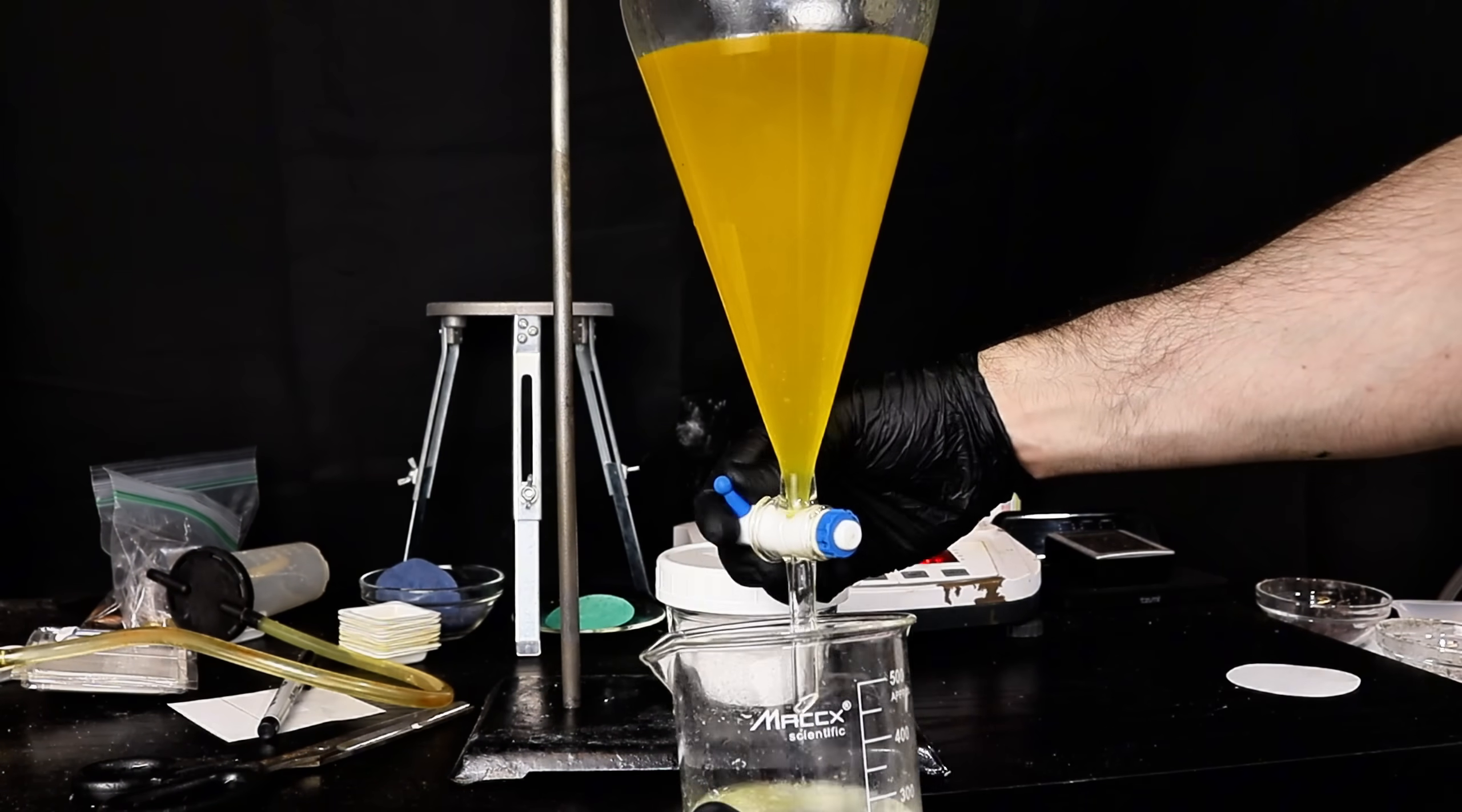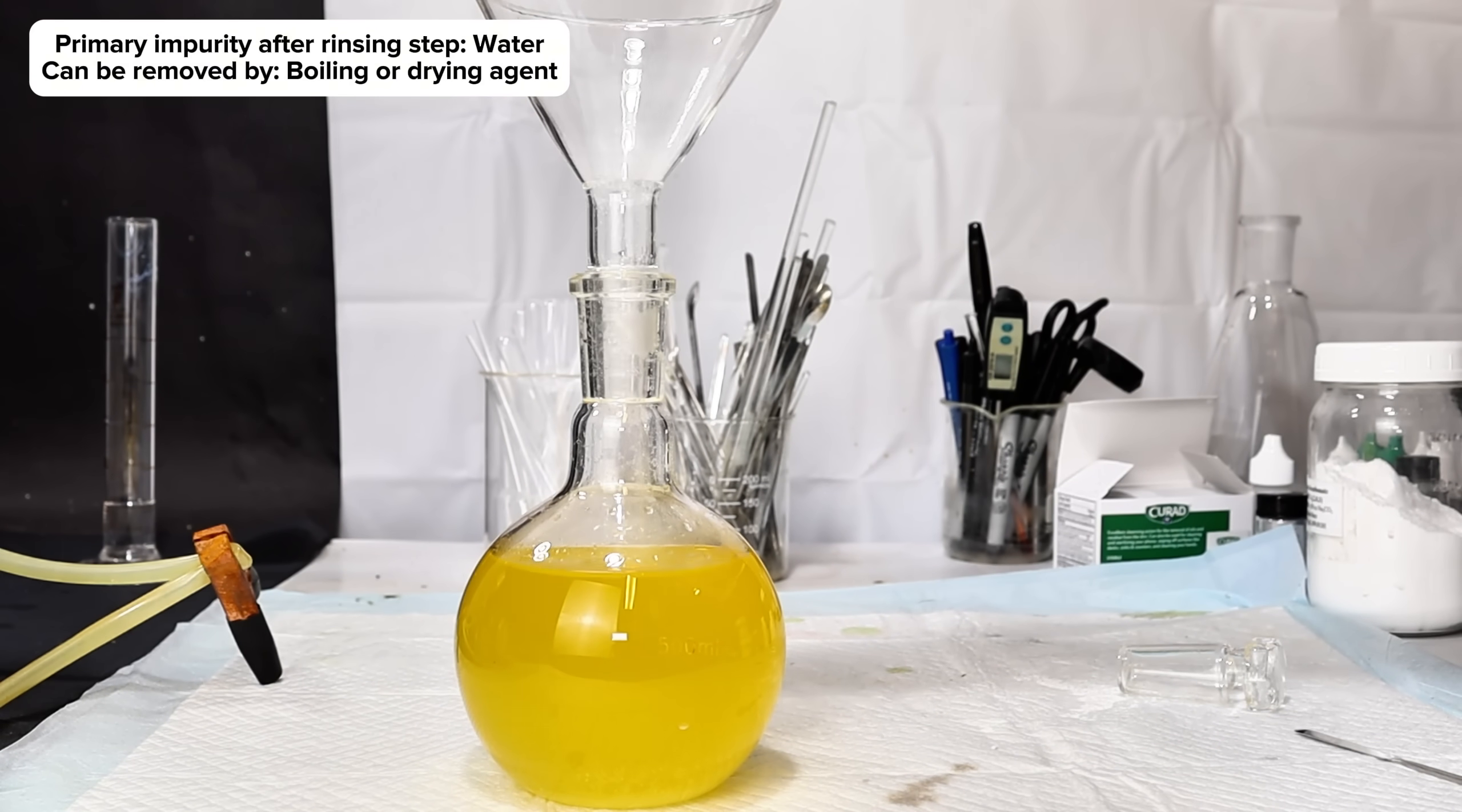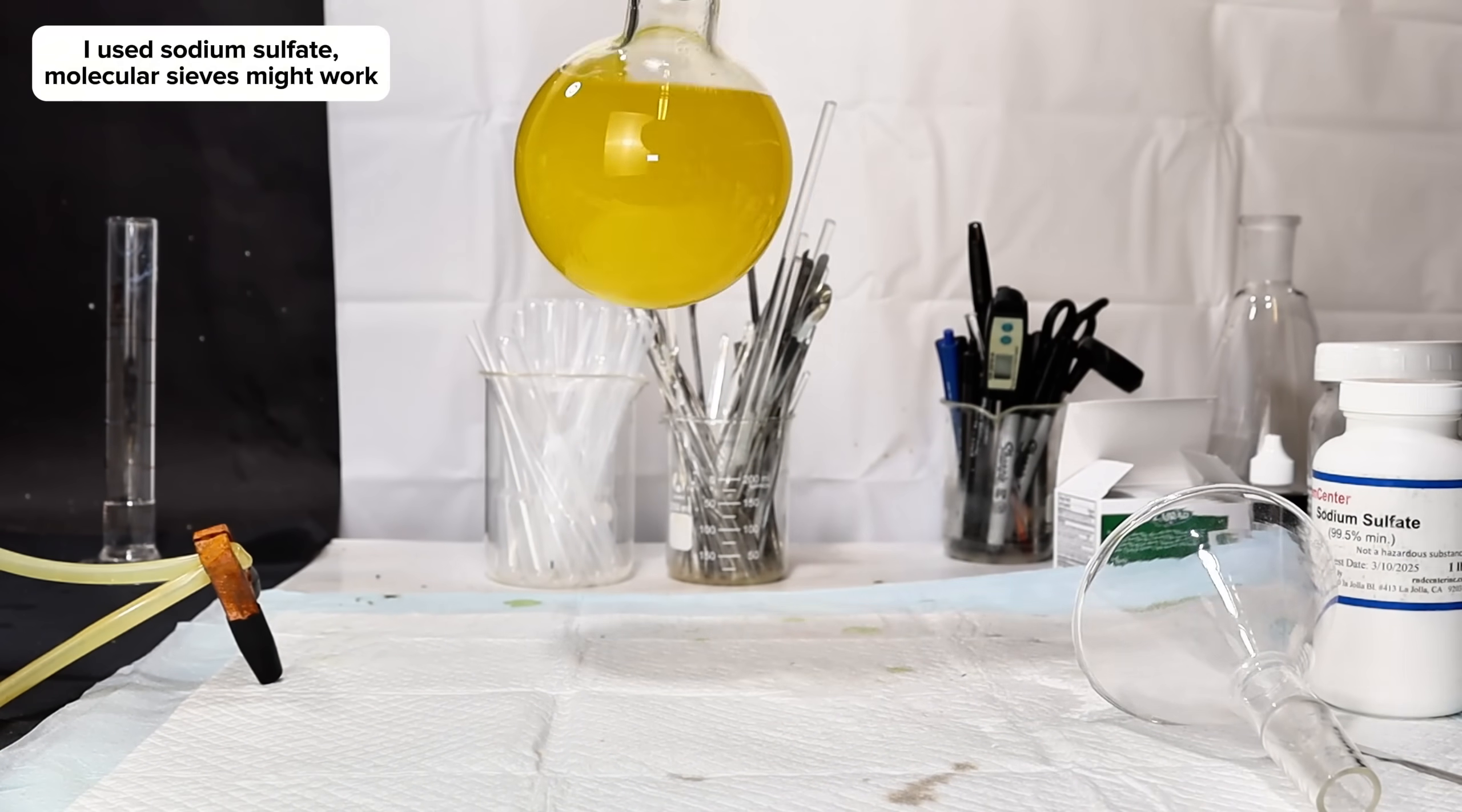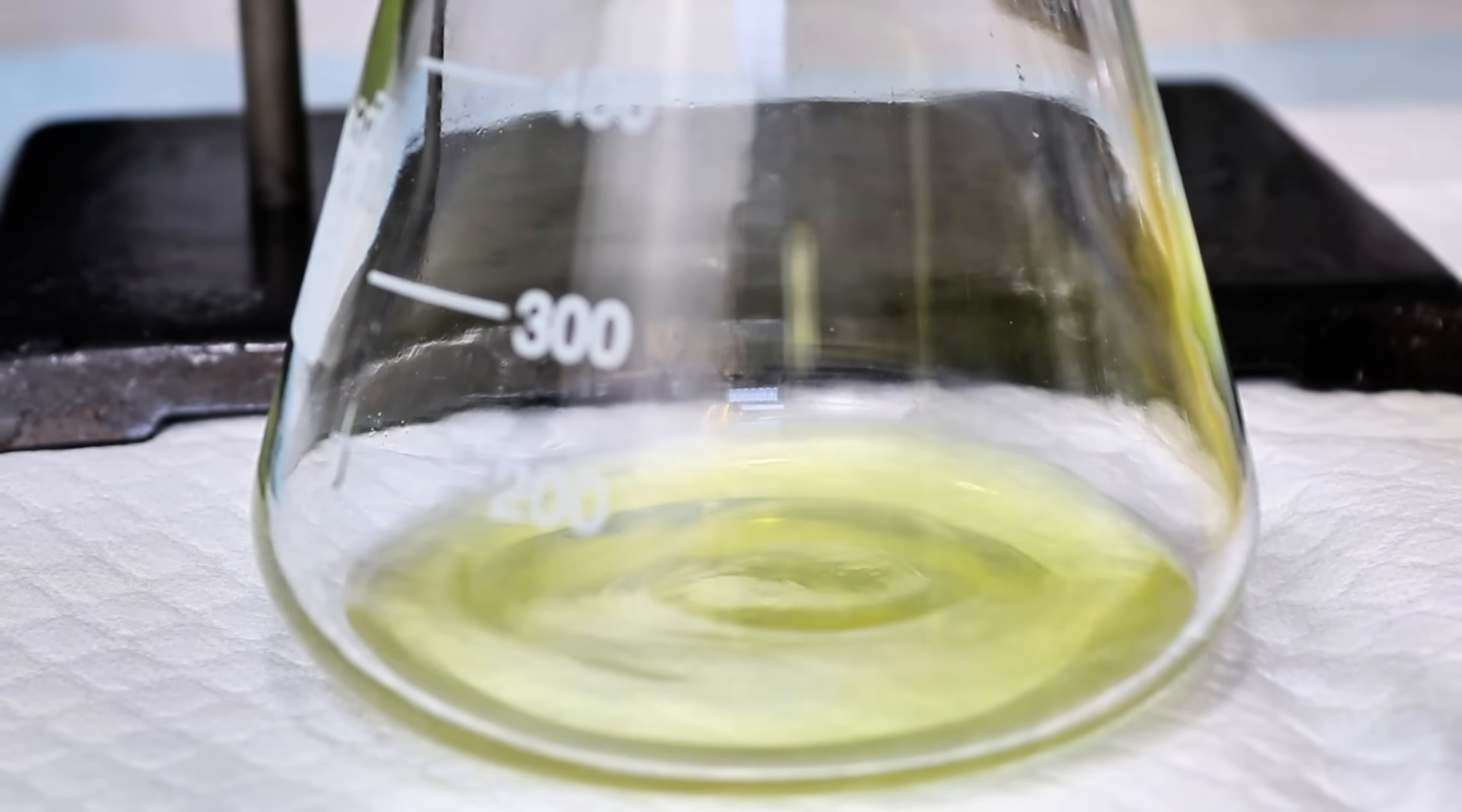The biodiesel is next drained into a flask and at this point the only significant impurity is water. The water can obviously be removed by boiling, but because I felt that was unnecessarily dangerous, I instead dumped in a few grams of anhydrous sodium sulfate and gave the flask a hard shake. This was again left overnight, during which time the sodium sulfate completely absorbed any water that was present in the biodiesel.